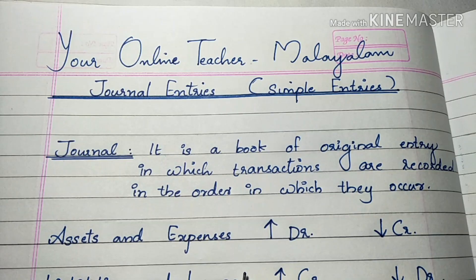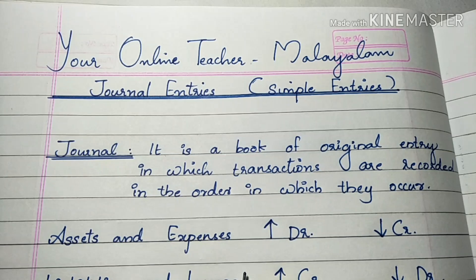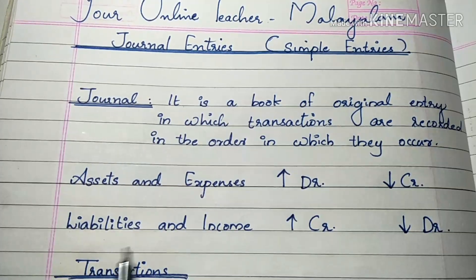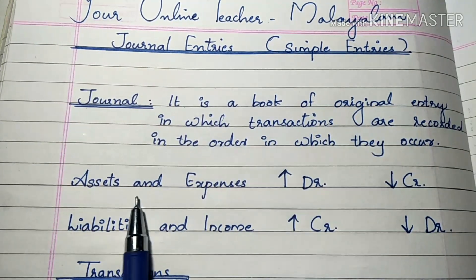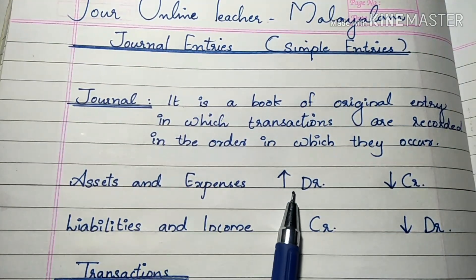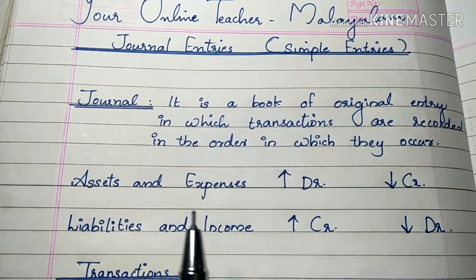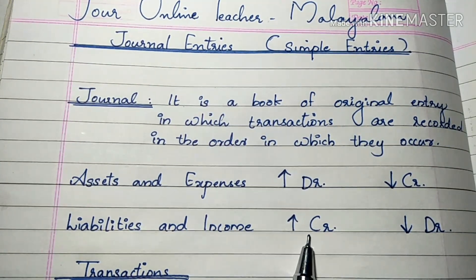Now the journal entry is very confusing — people get confused about whether to debit or credit. We need to understand the two categories: assets and expenses have a debit balance, while liabilities and income have a credit balance.